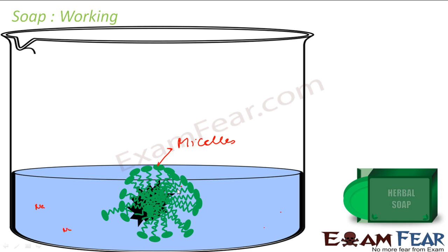So now, if you see, this micelle has trapped the whole dust in a spherical form. It has trapped the whole dust, and now this outer part — the ionic sodium end — is attracted to water. There was dust here which was not attracted towards water, but this micelle has formed a spherical structure and can easily attach to water. It is like a cover — it has wrapped the dust with something which dissolves in water. So we have made insoluble dust soluble by wrapping it with a water-soluble substance.